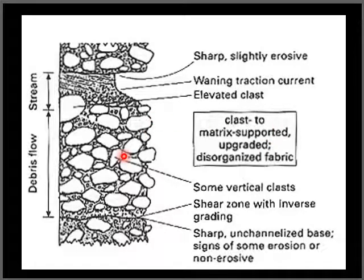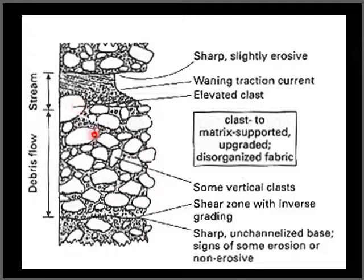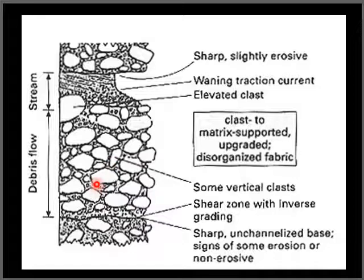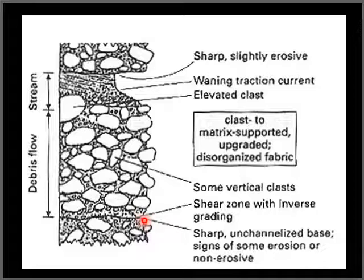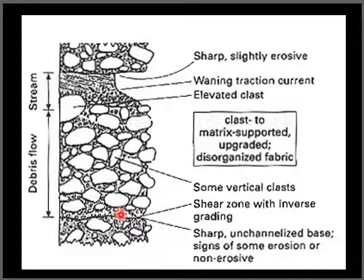This is an example of a stratigraphic log of a deposit found at the head of the fan — a section of a debris flow. It is chaotic, clast-supported, sometimes matrix-supported, disorganized, and ungraded. It has a sharp base, and it can have an unchannelized base. Some erosion can be seen, and sometimes due to shearing, you can observe an inverse grading at the base of this debris flow deposit.